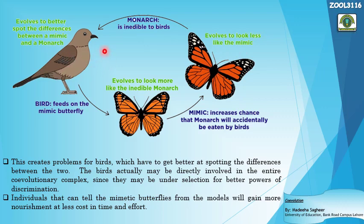During this process, birds also evolve. They could previously catch both viceroy and monarch easily, but once the viceroy mimicked the monarch they got confused between the two. So birds evolved to better spot the difference between the mimic and the model butterflies — this is another step of co-evolution taking place in the birds, developing a trait to better discriminate between model and mimic butterflies.